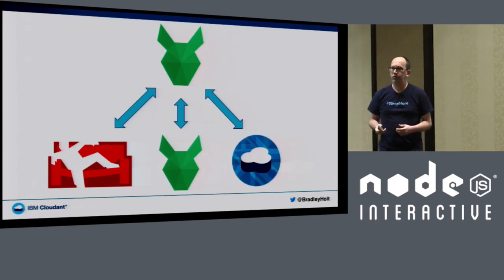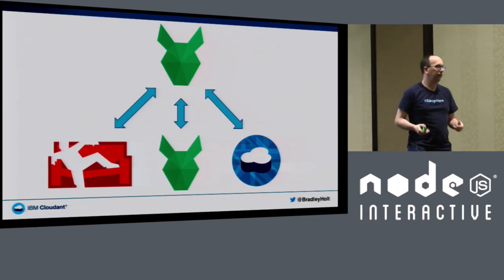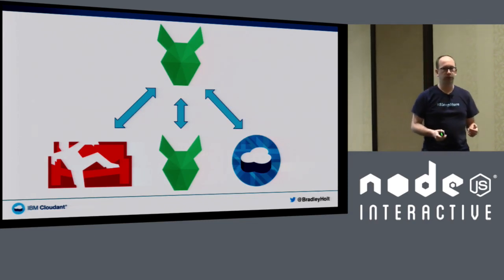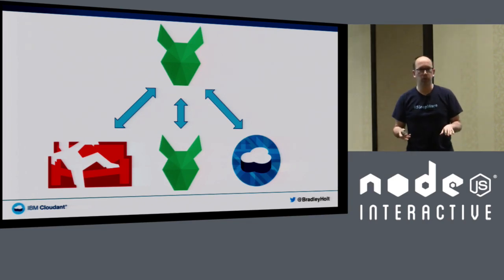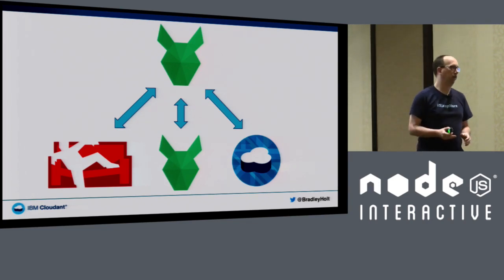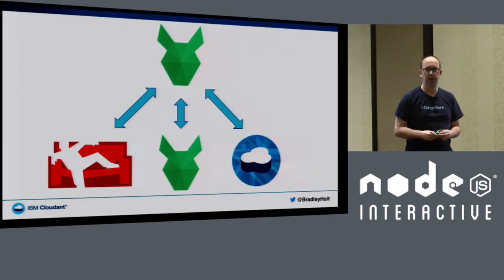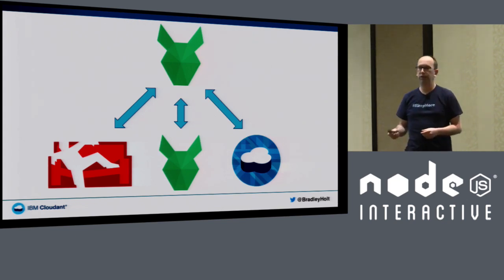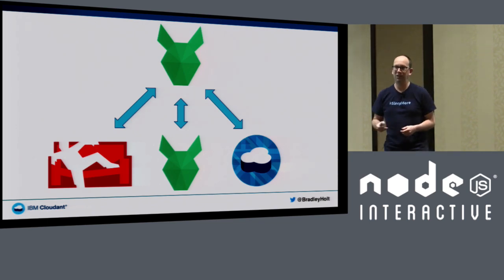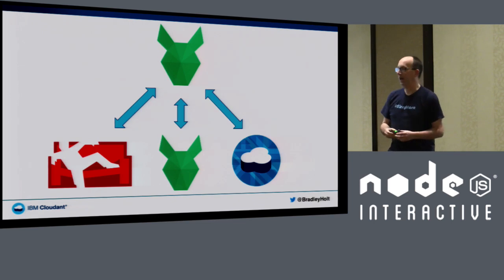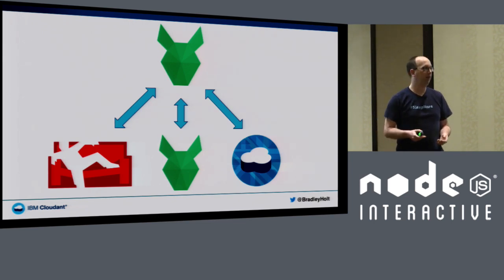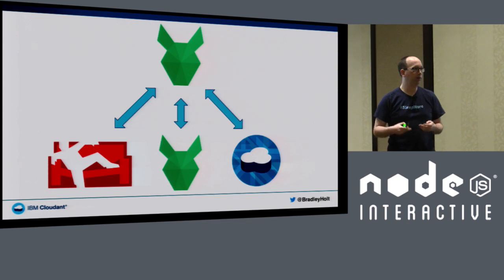There are a bunch of different ways to do offline first and a lot of different technologies and approaches. Today I want to talk about one particular technology: PouchDB — that's Pouch with a P. PouchDB is actually based on Apache CouchDB — that's Couch with a C. Basically, PouchDB is CouchDB shrunk down to fit in your web browser.